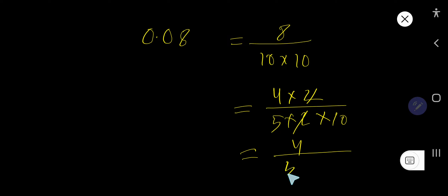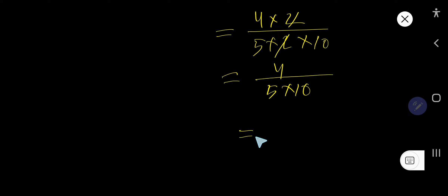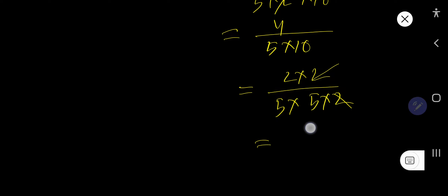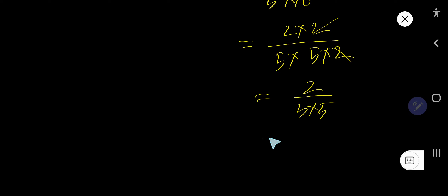We are getting 4 over 5 times 10. Now break 4 as 2 times 2, and also break 10 as 5 times 2. The 2s cancel each other, so we are getting 2 over 5 times 5, that is 2 over 25. This is the answer.